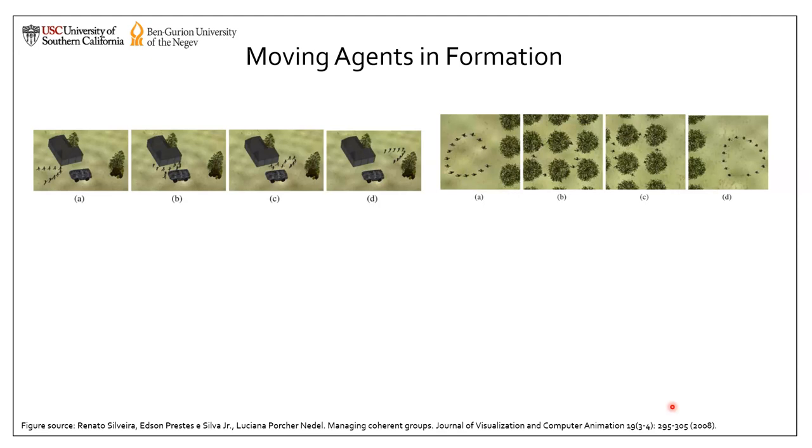However, when the agents need to go through some congested regions, like this narrow corridor or this forest, they cannot stay in their desired formation. Instead, they have to compromise their formation temporarily and get back to their desired formation only after they left the region.